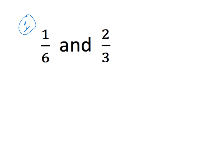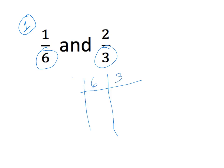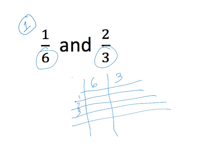The way that I find it easy to determine least common denominators is by making a table with our denominators. So here we have six and three, so I'm going to make my little table — six and three — and we'll write one, two, three, four. What this is: we will multiply this number by this number and write it here.